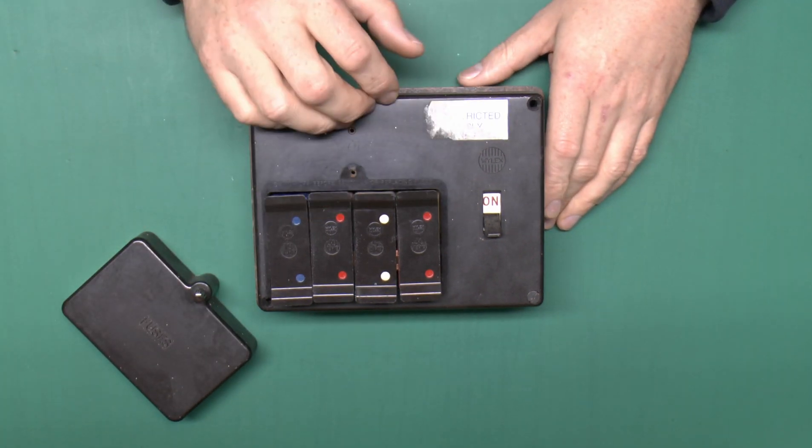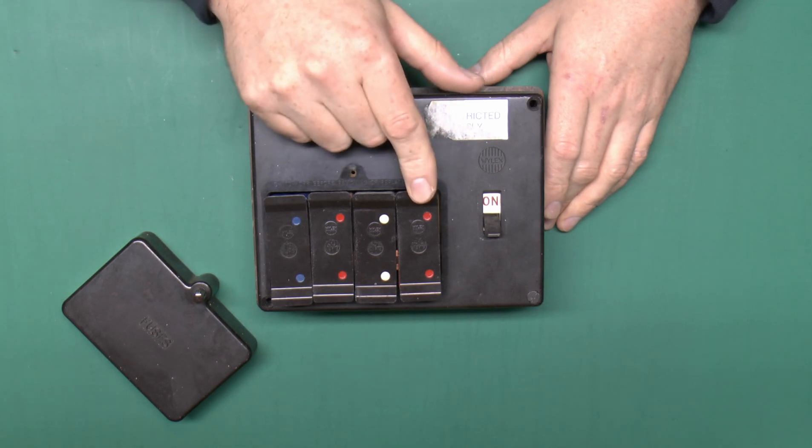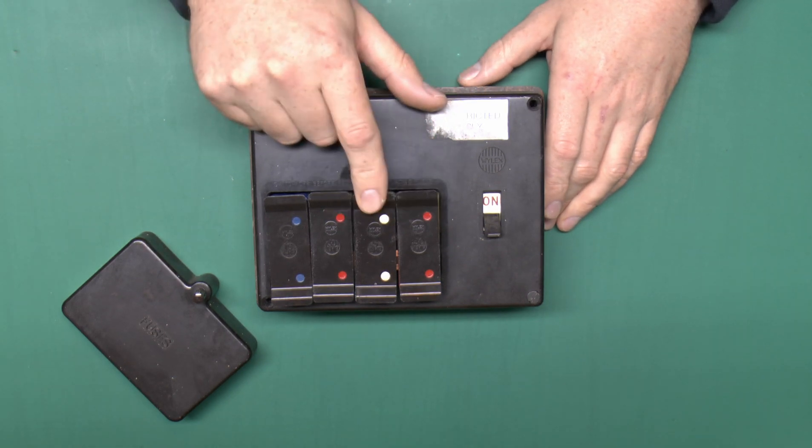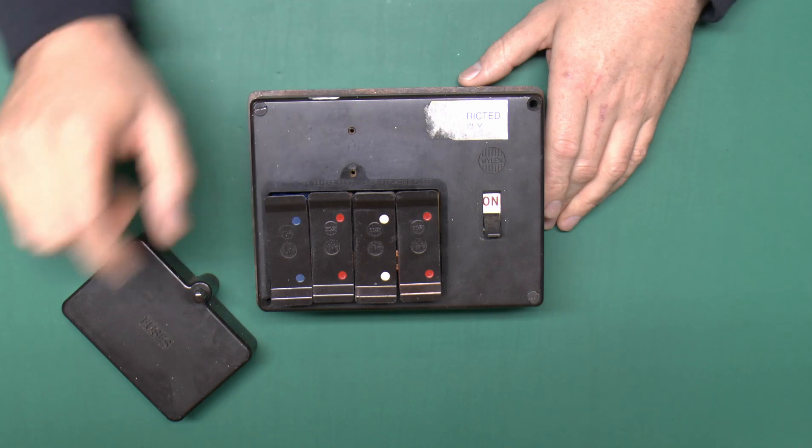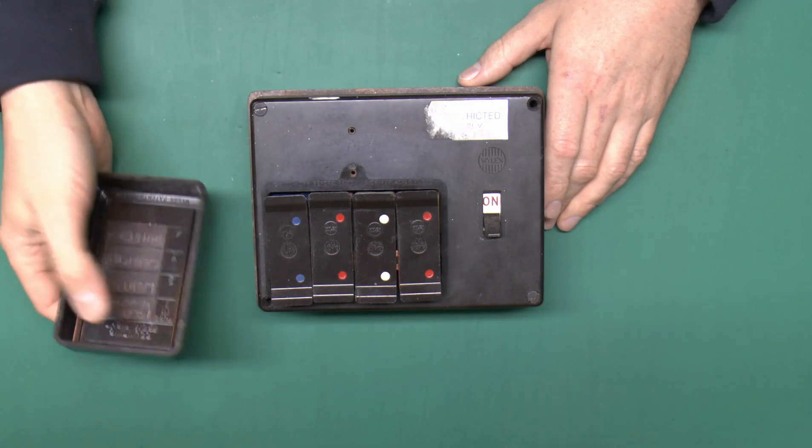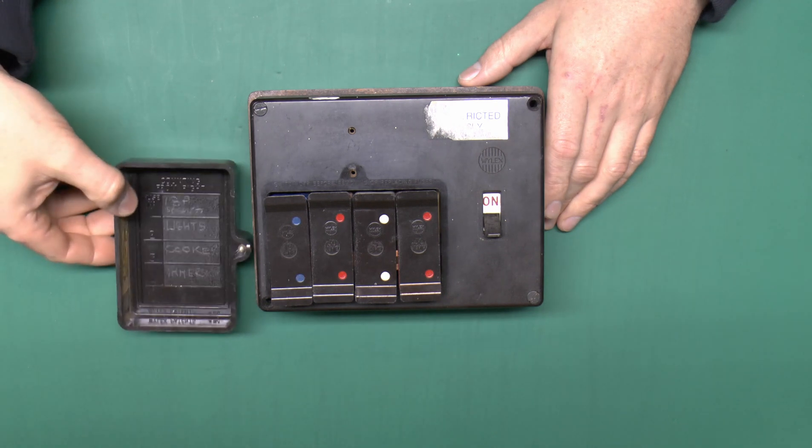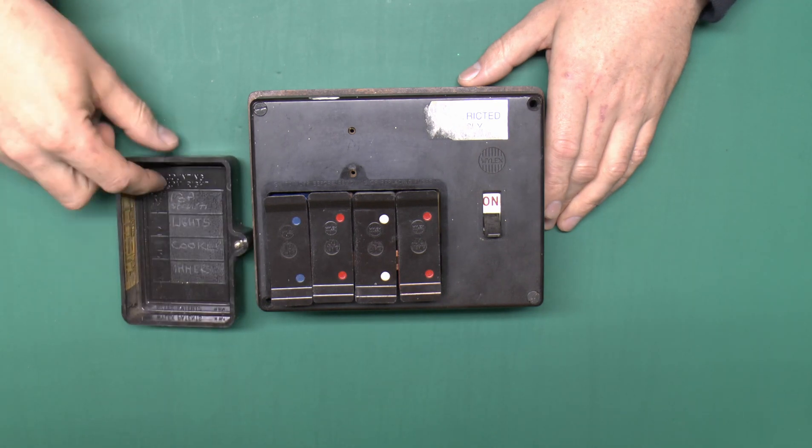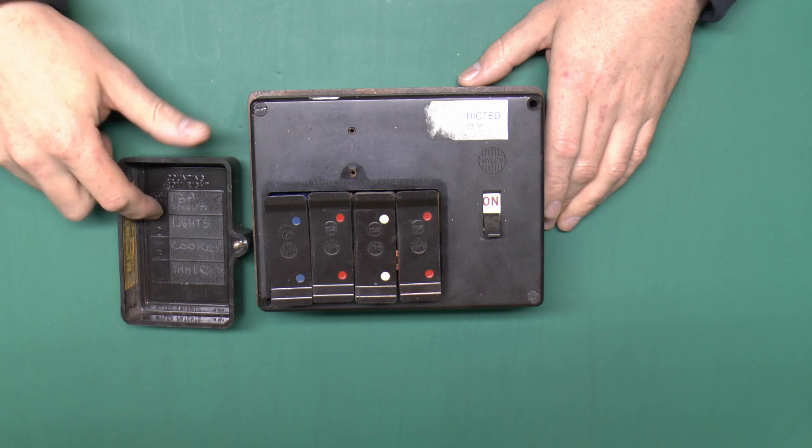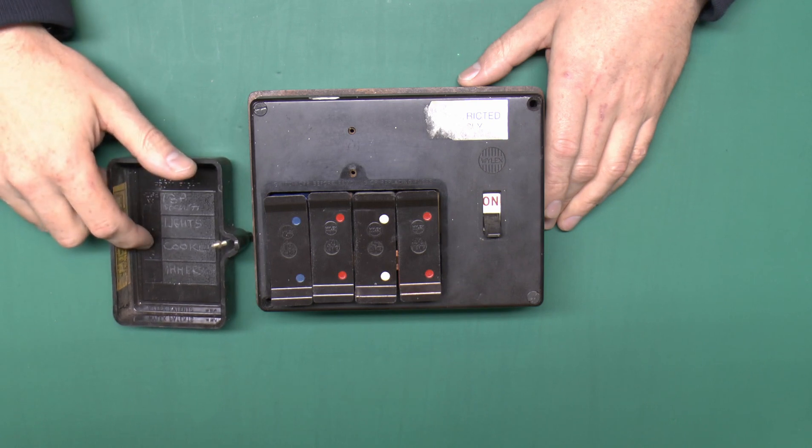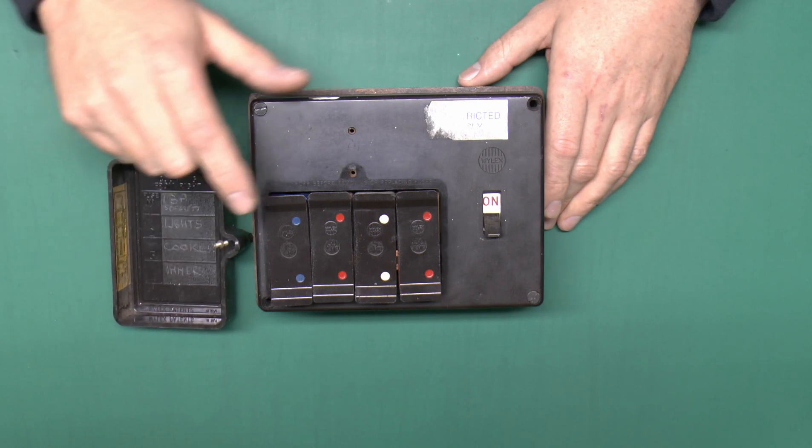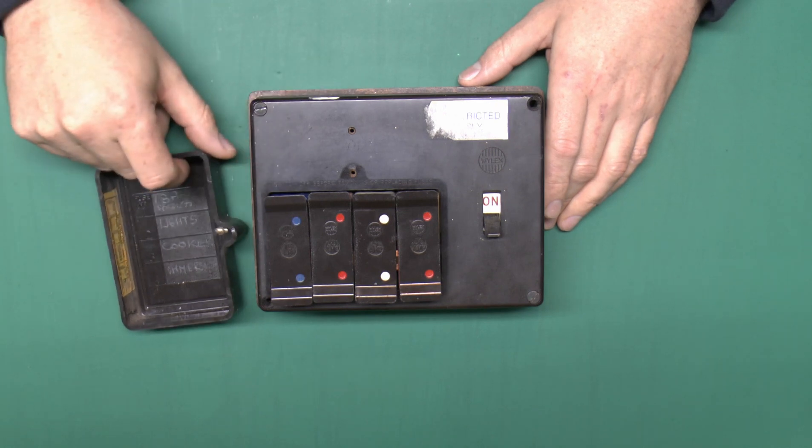This particular one has the usual set of four fuses in there, 30 amps for the red and 5 amps for the white, 15 amps for the blue one. The cover here astoundingly does actually have the things marked inside. So we've got sockets, lights, that's the 5 amp one, cooker 30 and immersion or immersion heater which would be the 15 amp blue one at the end.